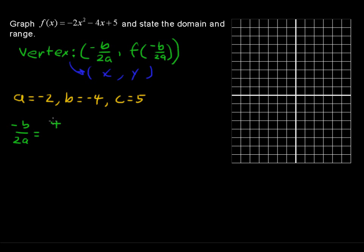And then over 2 times -2, because a is -2, so 4 divided by -4 is -1. That's going to be the x-coordinate of the vertex.